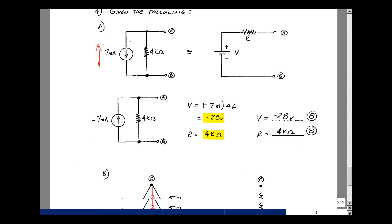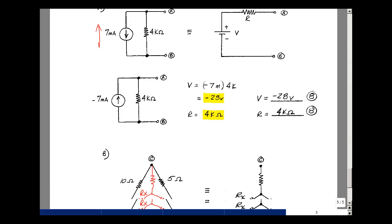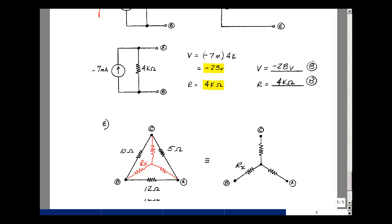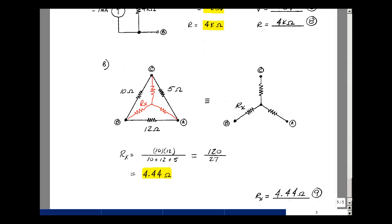The second problem was looking at a delta and finding one of the resistors in the Y. I drew the Y inside of the delta, so I could use my inspection algorithm. The resistor R sub x is equal to the product of the two resistors that are connected to the same node over the sum of the three. So it's 10 plus 12 plus 5. That's 120 over 27, 4.44 ohms. Again, this was either right or wrong, it was worth nine points. And this is exam number one.